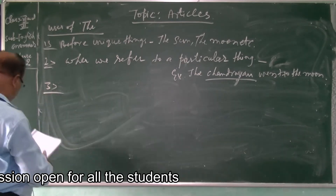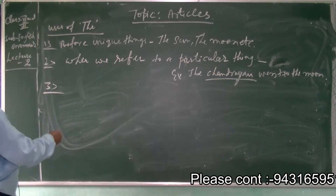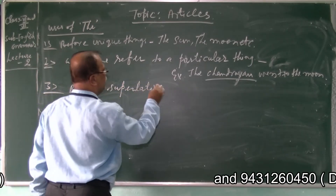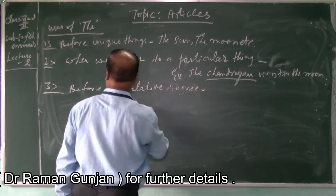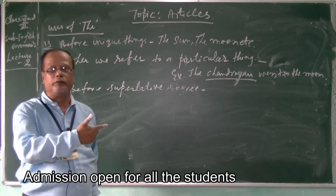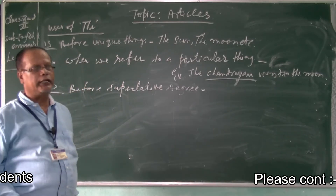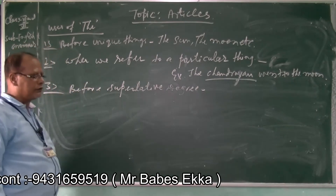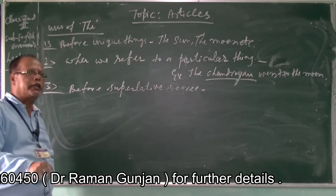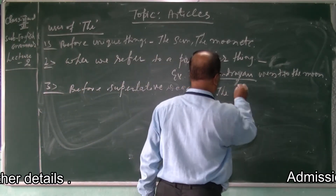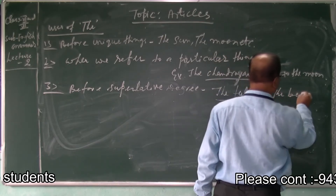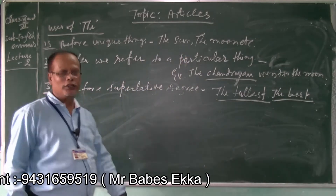Number three: before the superlative degree. As I have already explained in your previous classes when we were talking about adjectives, there are three degrees of adjectives, and one of them is the superlative degree. The superlative degree of an adjective is always used with the definite article 'the.' For example, 'the tallest,' 'the best.'